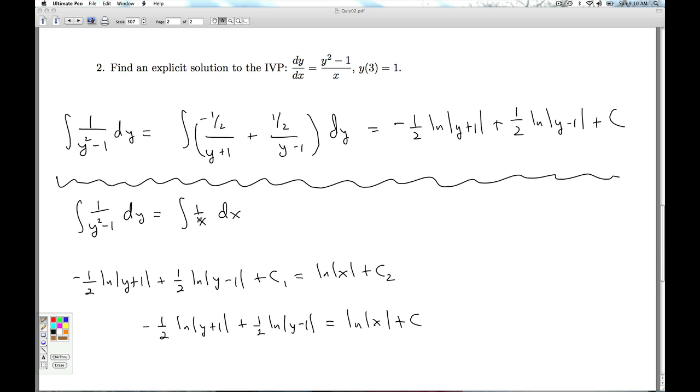Now, as we've been marked in class, when you have an initial value problem, and you're asked to find the explicit solution, you can invoke this initial value anytime you need to. You can invoke it as soon as you get an implicit solution to determine what this c is. It makes the constants more manageable as you go through.